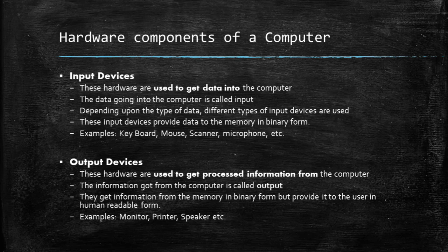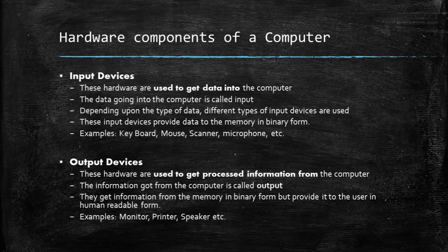Output devices are hardware used to get processed information from the computer for the user; the information received is called output. They receive information from memory in binary form but provide it to the user in human-readable form. Examples of output devices include monitors, printers, speakers, and projectors. It should be noted that the touch screens of smartphones act as both input and output devices — they record coordinates of finger touches as input and use the screen as a display for output.